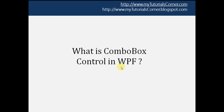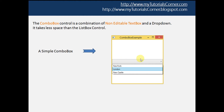This is a combination of a non-editable text box and a drop-down. The combo box control also provides the IsEditable property — we'll talk about that later. As it hides the elements, due to this feature it takes less space than the list box control. If you don't know about the list box control, please watch part 11 before proceeding. On the screen you can see there is a simple combo box.